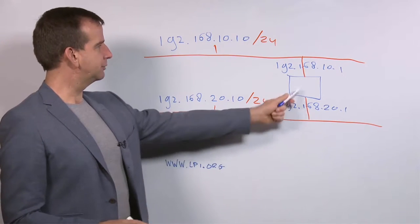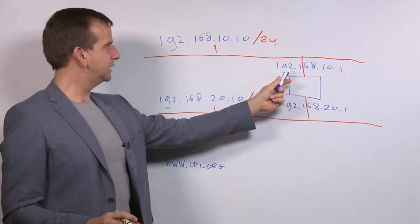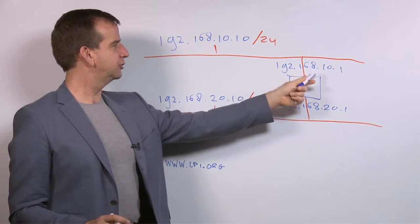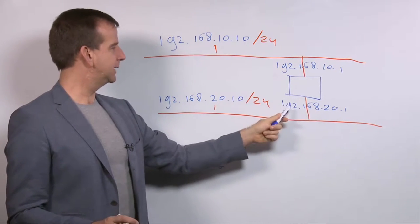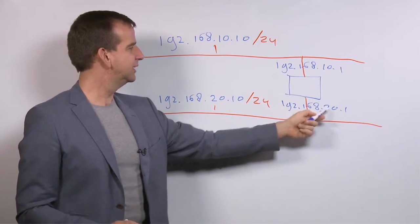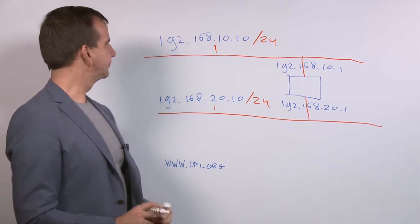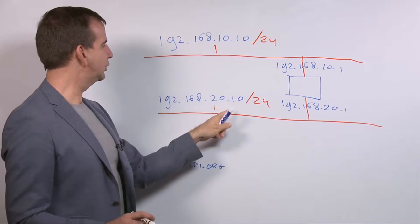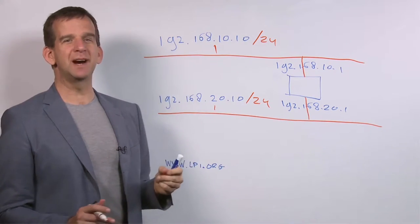So in this example, we have a router that is configured with the IP address 192.168.10.1 and the IP address 192.168.20.1. Now for this computer, in order to reach this network, we need to define a route.